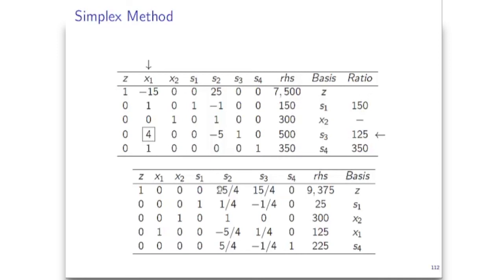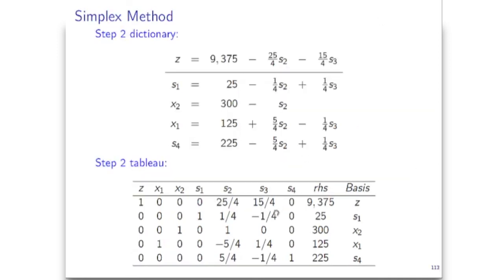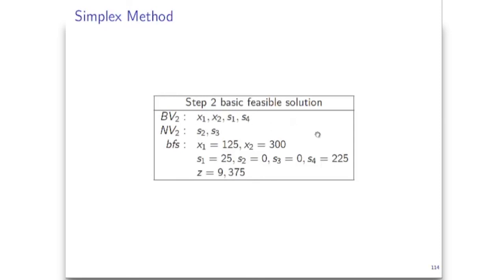This situation corresponds to all negative coefficients in the dictionary representation. The dictionary form shows the objective is 9375 minus (25/4)s2 minus (15/4)s3. Therefore the best we can achieve is 9375 by setting s2 and s3 to 0. We write down the basic feasible solution: x1=125, x2=300, along with the slack variable values and objective value. When reporting the final solution, we just report x1, x2, and the objective value — the slack variables were not part of the original model.